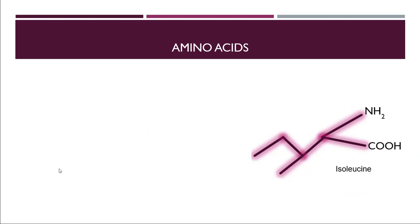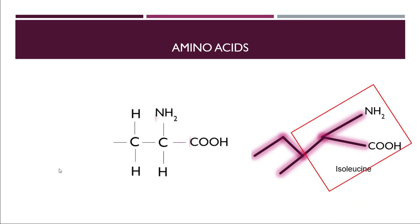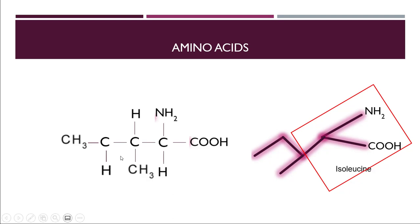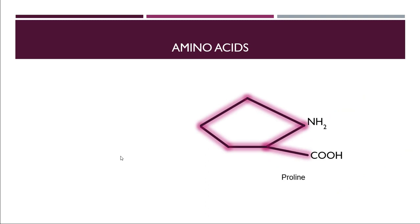Next is isoleucine. Take the fork and print it. The beta carbon is attached to two different carbon atoms, so one hydrogen gets replaced with a CH3 group. There is another carbon attached further along, so add that carbon, and then attach one more carbon to it. That second carbon needs two hydrogens to stabilize. This is the official structure for isoleucine.